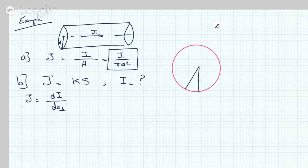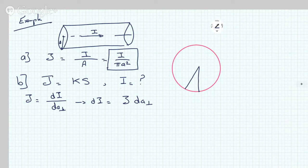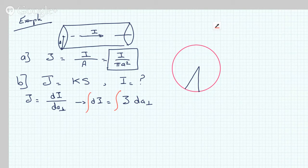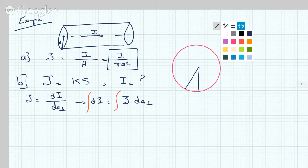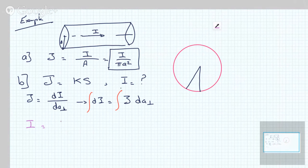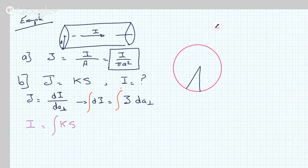I know that dI equals J dA perpendicular, and if I integrate both sides, I can put an integral sign here and an integral sign here. So the next step becomes integral of dI is I, J of course is KS, and now the question becomes what's this guy here. For this guy here, we're going to take a small piece right here and we know that the length of this is dS.